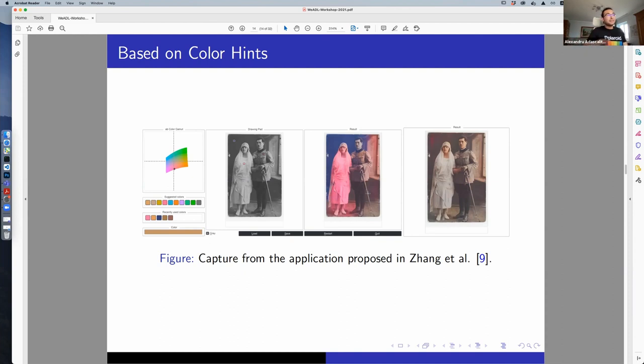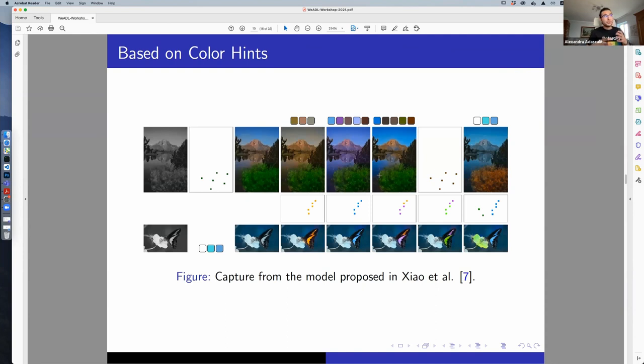Another way to express your preferences is by giving either histograms, kind of color palettes, like I want these colors, like when you are deciding how your walls in the house will look like. And yeah, those are given. The model knows how to deal with them. It's important to know that you have a lot of options in terms of color hints.